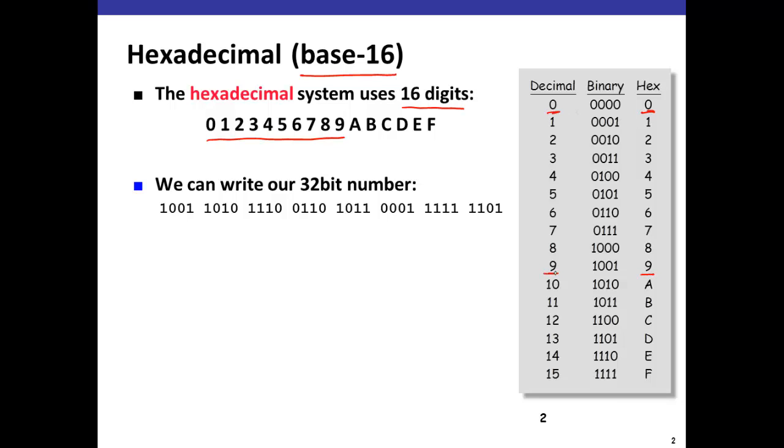0 through 9 have the values 0 through 9 in decimal, and the remaining 6 digits are the first 6 digits of the alphabet. We just give them values continuing on where we left off with 9, so A is 10 all the way to F which is 15.